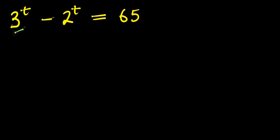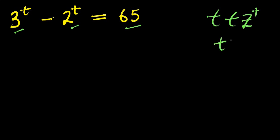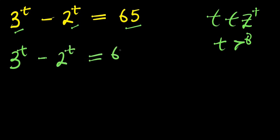How to solve 3^t minus 2^t equals 65. We are solving for the value of t that will satisfy this equation. Remember, t is a positive integer, meaning t is greater than zero. Let's recopy the problem: 3 to the power of t minus 2 to the power of t equals 65.